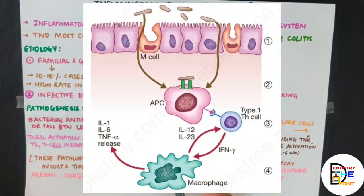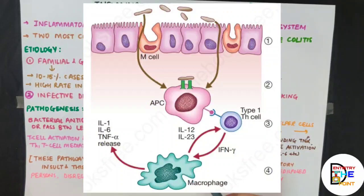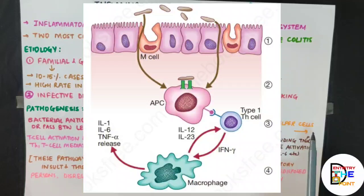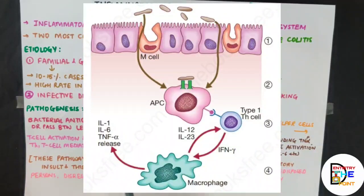M cells, or microfold cells, are specialized epithelial cells present in the intestines that lack their brush borders, allowing microparticles or bacteria to pass through the mucosal barrier. As they enter the lamina propria, they are presented to type 1 T helper cells by antigen-presenting cells in the lamina propria.